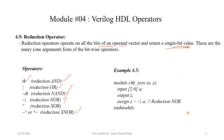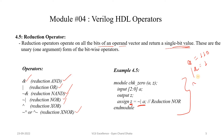Let's see an example: assign Z = ~|A. Suppose A is 3'b110. Since this OR operation is applied to a single operand, it becomes a reduction operator. The OR of A across all bits will be 1. Then NOT of that OR gives Z = 0. This is how the reduction operator works.